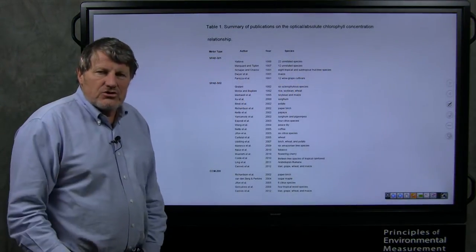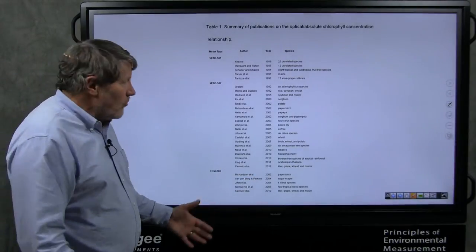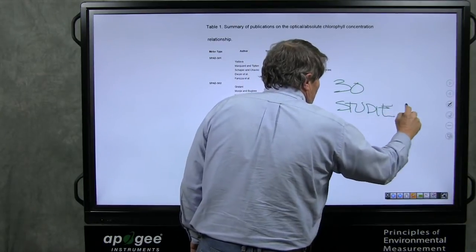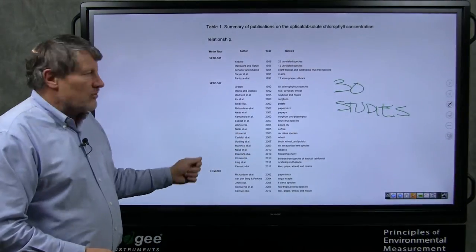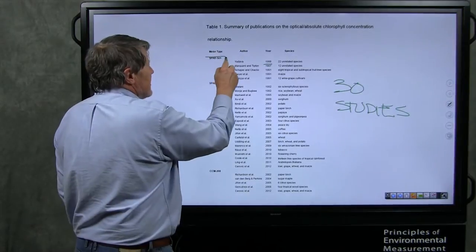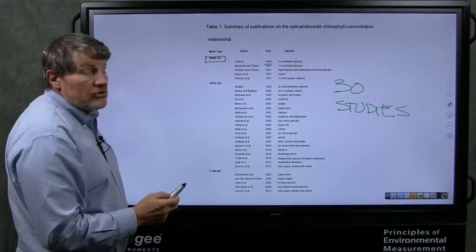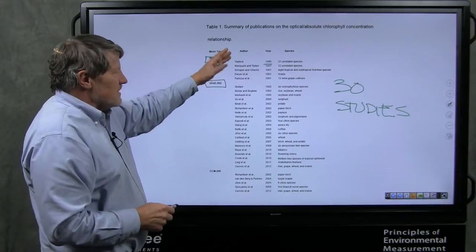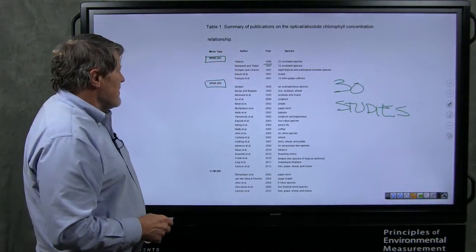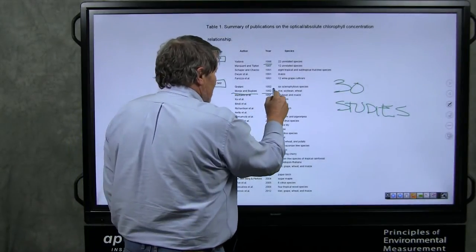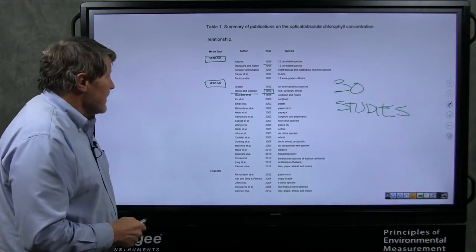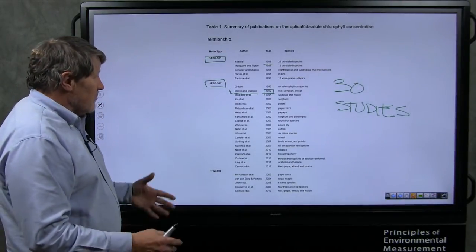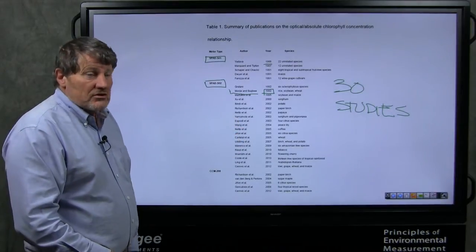The first thing we did is a massive literature review, and we found that there are over 30 studies on this relationship between transmission of light and chlorophyll concentration. They started back in 1986. There was a meter called the SPAD Minolta 501, and they later, in 1992, came out with the Minolta 502. These are old meters. People are starting to establish this relationship. Here's a critical paper right here, Monje and Bugbee, 1992. This is one of my graduate students, Oscar Monje and I. This paper turns out to be one of my top five most highly cited papers, because we discussed the inherent limitations of doing this back in 1992.